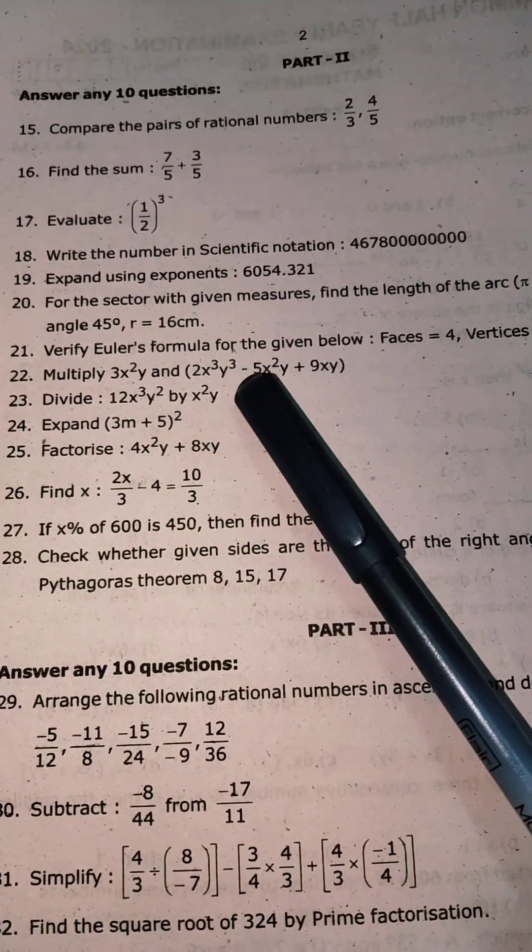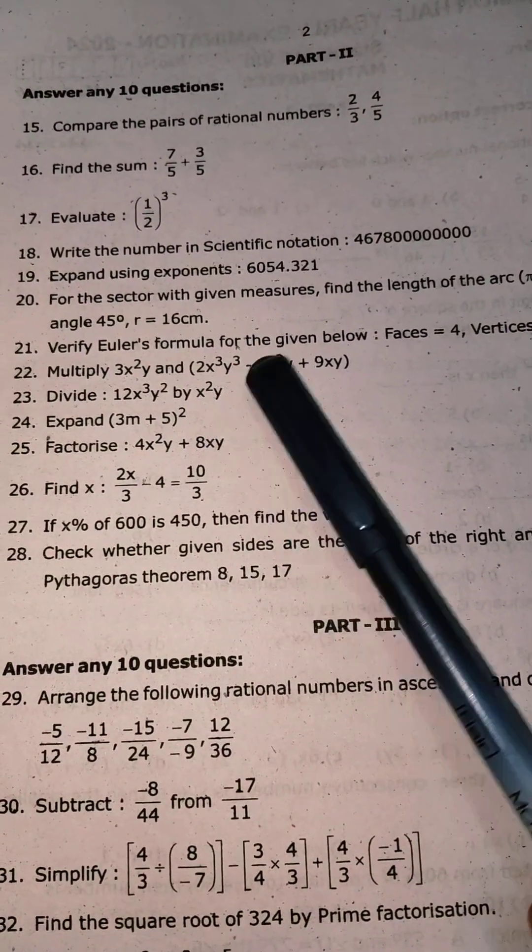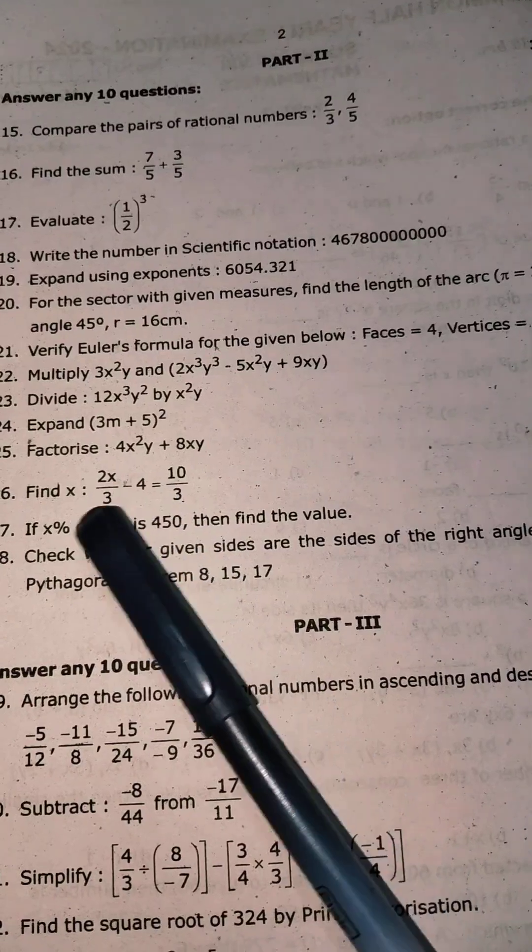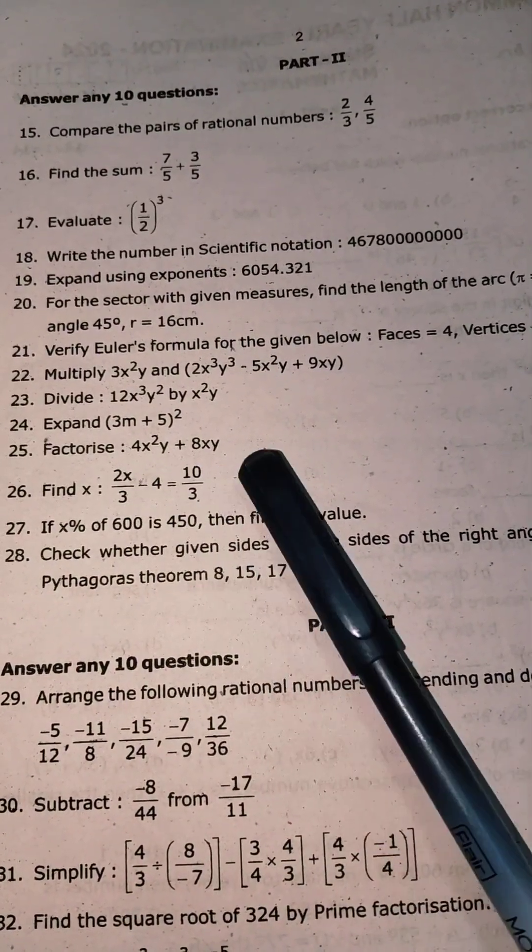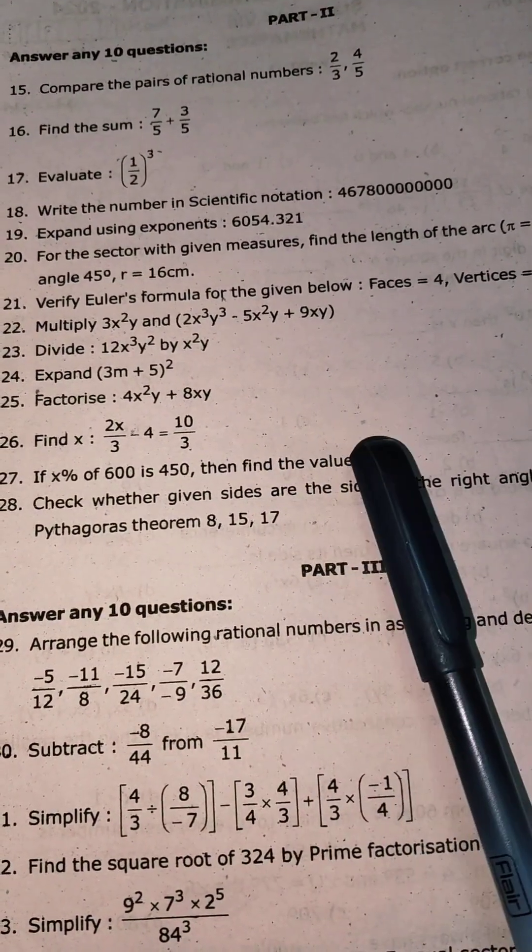Verify Euler's formula for the given below. Multiply. This is the third chapter. Multiply, divide, expand. Factorize. Find x, 2x by 3 minus 4 is equal to 10 by 3. So, this is the fourth chapter.